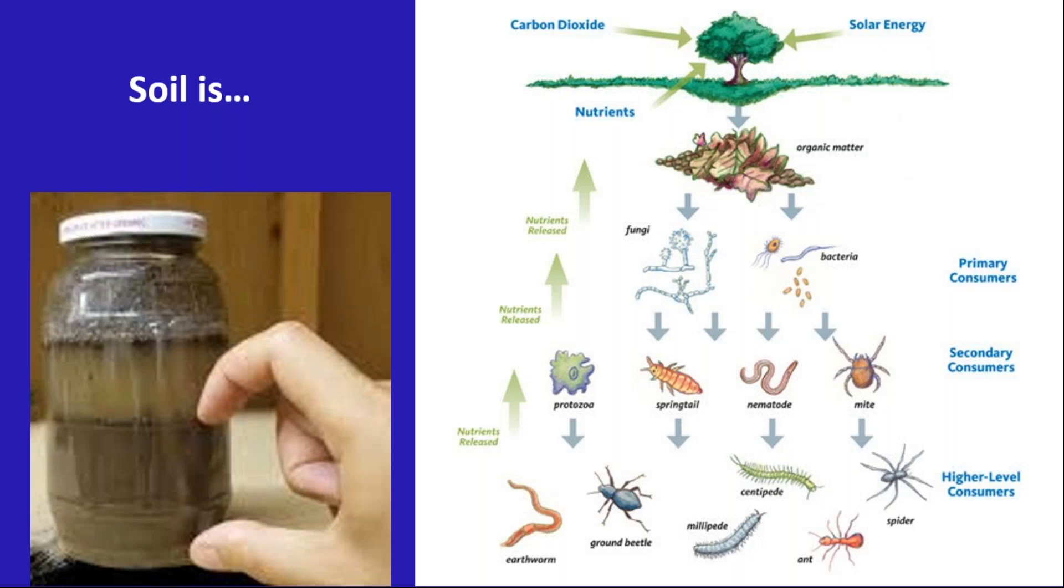There's a picture here of a jar where you can take the soil from your garden, mix it up with water, shake it up in a jar, and then let it sit for a bit. All of these layers that you see here tell you the different components of what your soil is made of, giving you an indication of what you're working with. There's instructions for how to do that in some of the resources I've sent you.